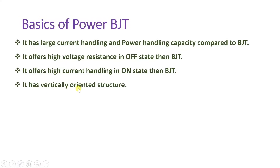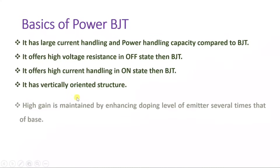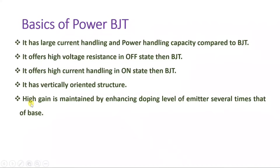Power BJT has a vertically oriented structure, and because of this vertical orientation, it offers higher power handling capacity. High gain is maintained by enhancing the doping level of the emitter several times that of the base. In its structure, the emitter has higher doping concentration, which is done to maintain high current gain.